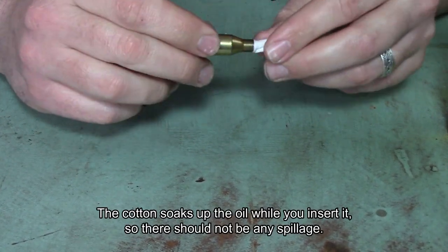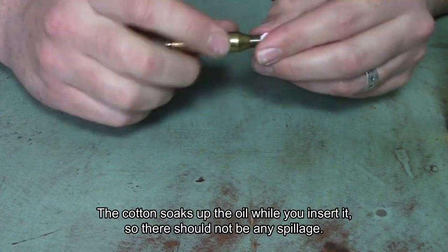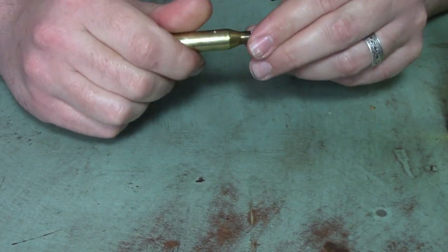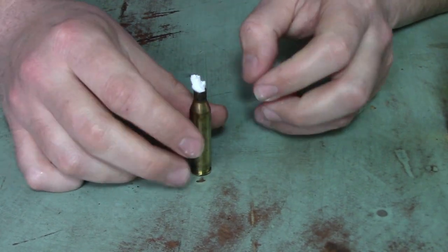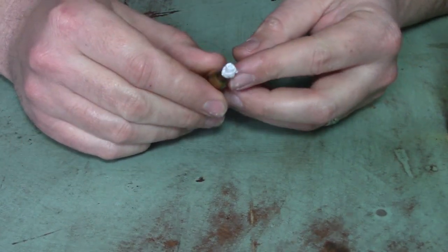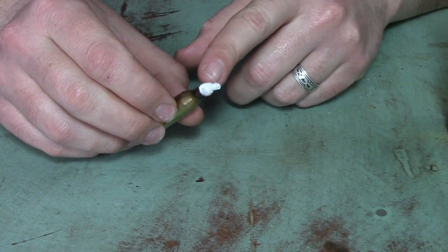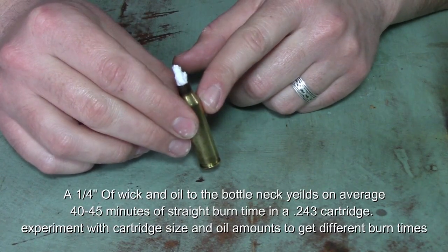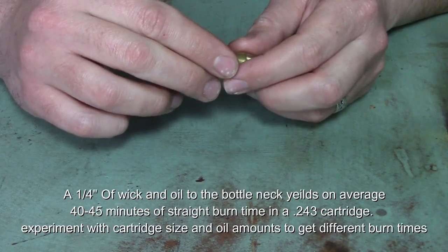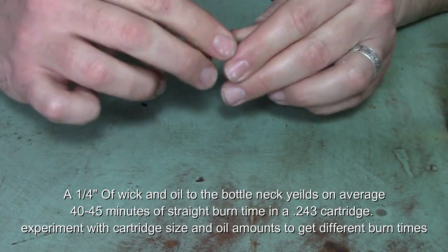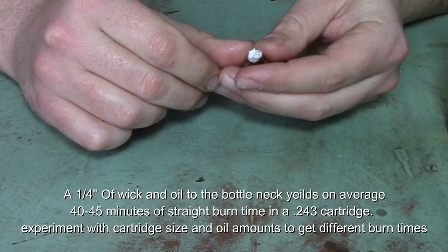And that fabric will start to disappear right into your bullet casing. Just kind of keep pushing and twisting. Keep feeding it in there to about that point. On average, when I'm burning this, I like to have about a quarter of an inch or so sticking out the top. Like so.